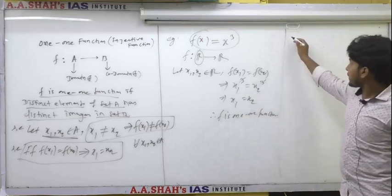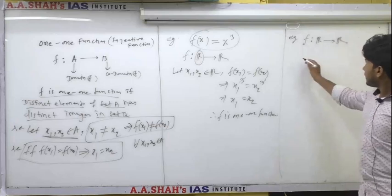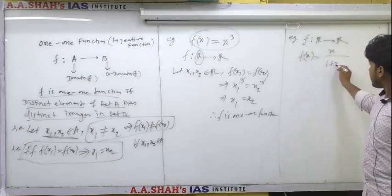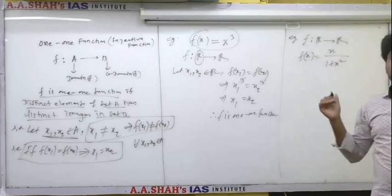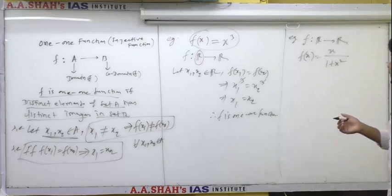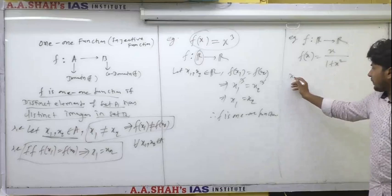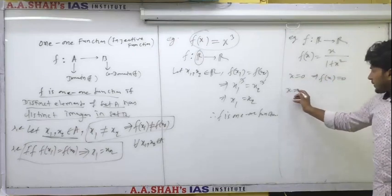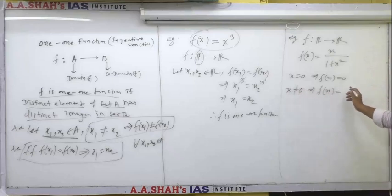We will discuss another example. f is a function from ℝ to ℝ defined by f(x) = x / (1 + x²). We need to check whether this function is one-one or not. If x is 0, then f(x) will be 0. If x is not 0, then we can write f(x) as x / (1 + x²).